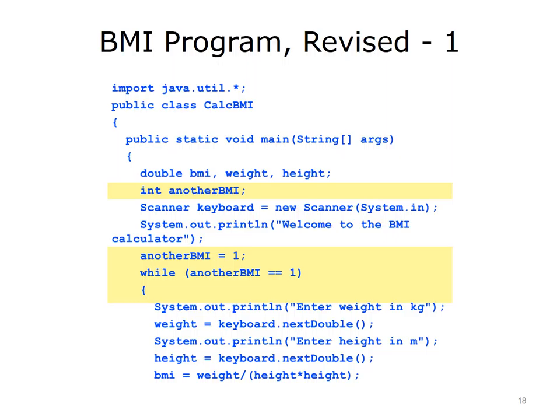The program added another variable called anotherBMI, an integer variable initialized to 1. The while loop repeats the BMI input and output loop. The condition of the while loop is anotherBMI equal to 1. The first time through, the program has already initialized anotherBMI to 1, so the while loop will execute. The rest of the code shown on the slide is the same as the original program, getting the weight and height from the user.